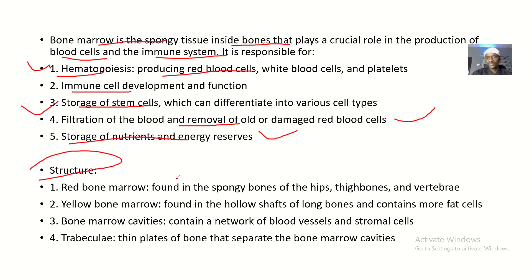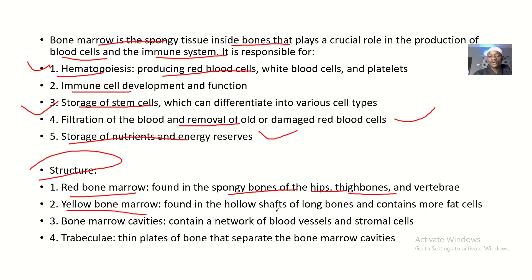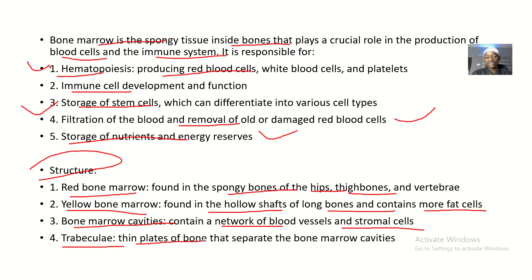For the red bone marrow, it is found in spongy bones like those of the hips, thigh bones, and vertebrae — that's in adults. In children, specifically infants below one year of age, it is found in all the bones. For the yellow bone marrow, it is found in the hollow shafts of long bones, and they contain more fats. Bone marrow cavities contain a network of vessels and stroma cells. Trabeculae are thin plates of bones that separate bone marrow cavities.